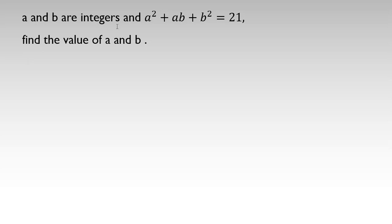a and b are integers and a squared plus ab plus b squared equals 21. Find the values of a and b. If I rewrite the equation, we have a squared plus ab plus b squared equal to 21.